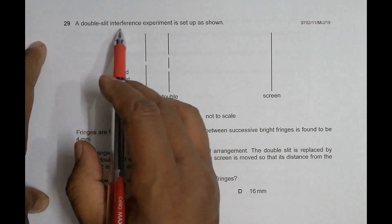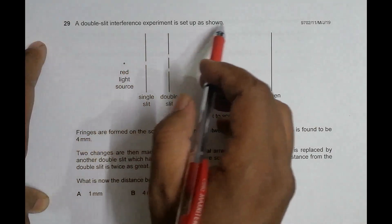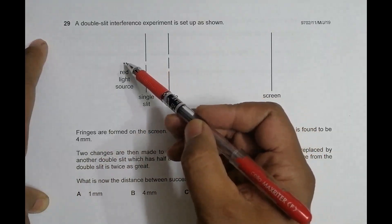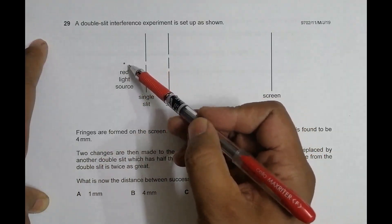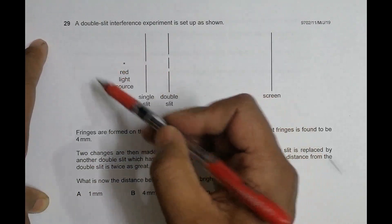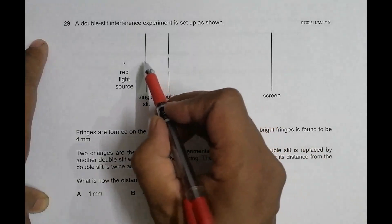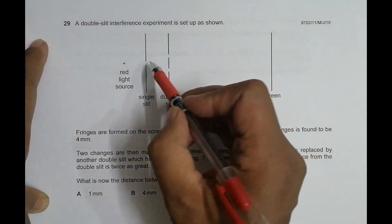It says that a double slit interference experiment is set up as shown. It is actually a Young's double slit arrangement, so it has a red light source, single red light source. It spreads to all directions, but what they have done is they have used a slit so that only this much portion of light is used.